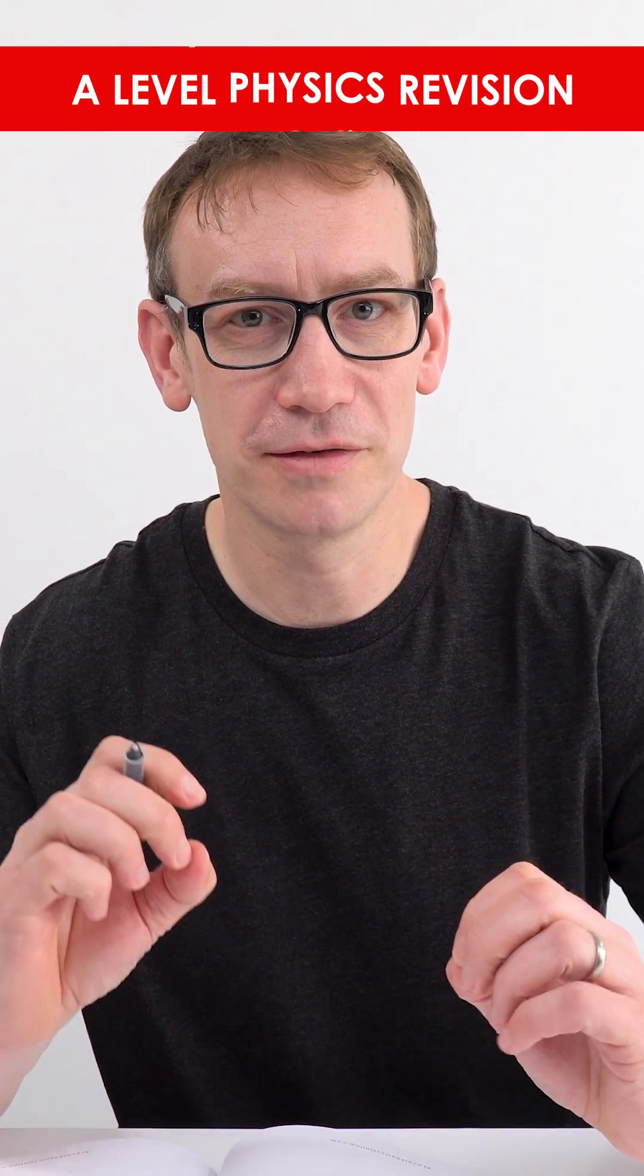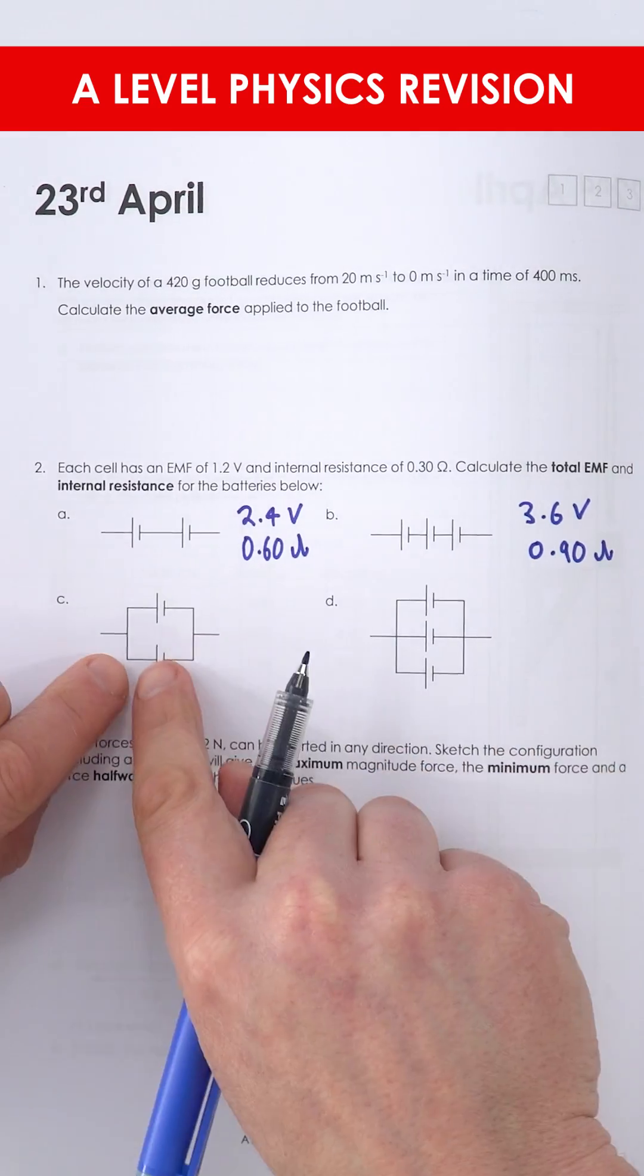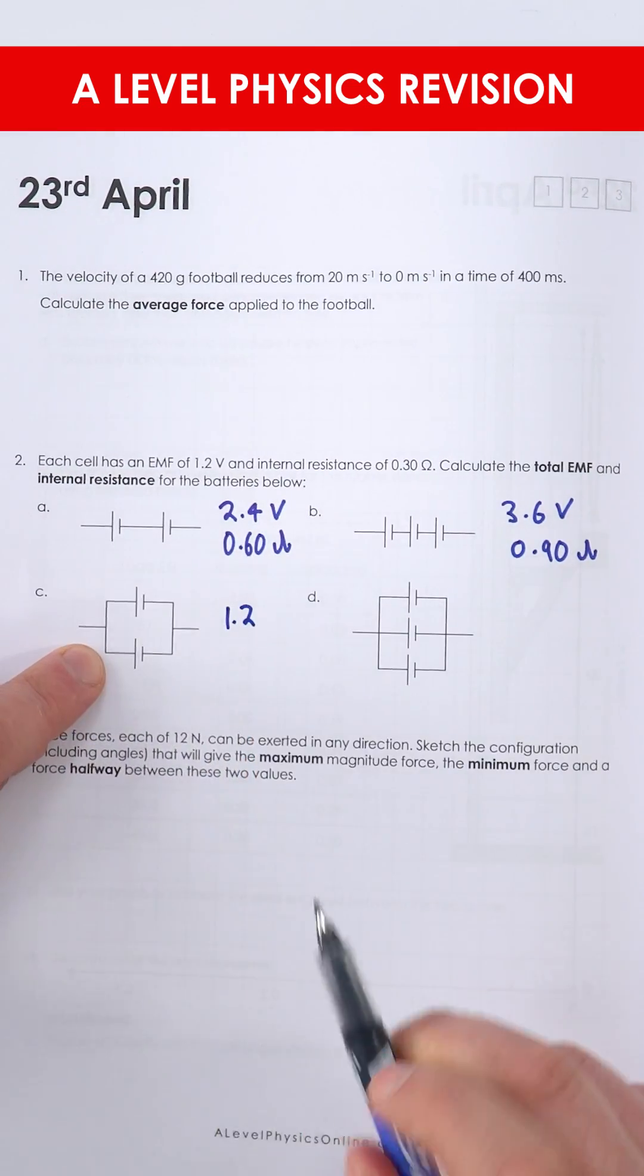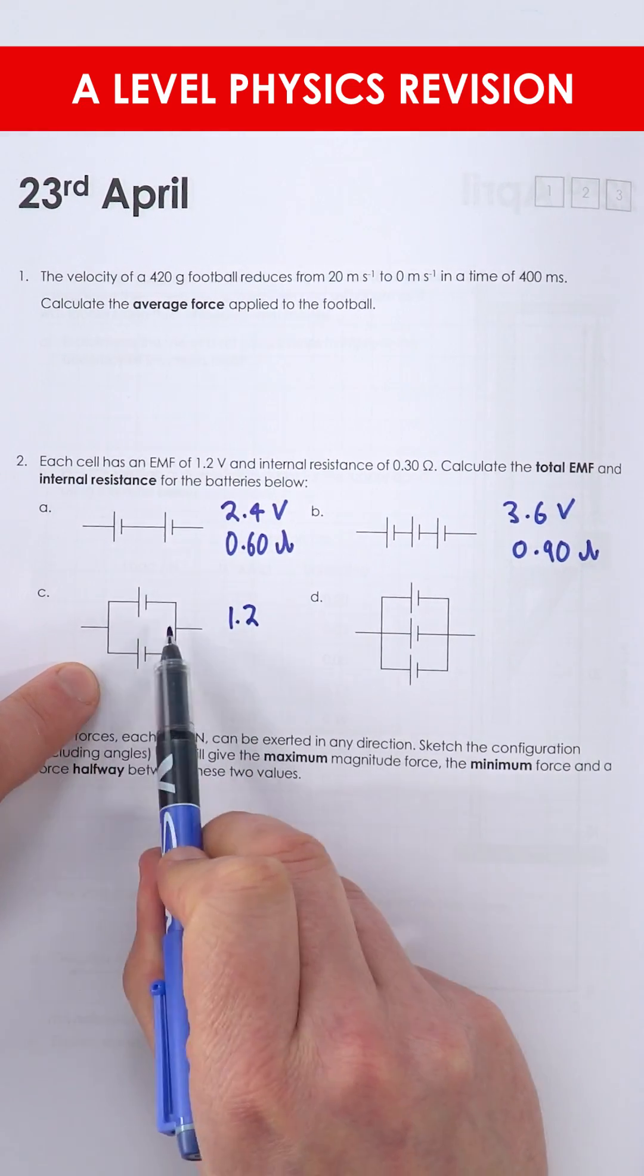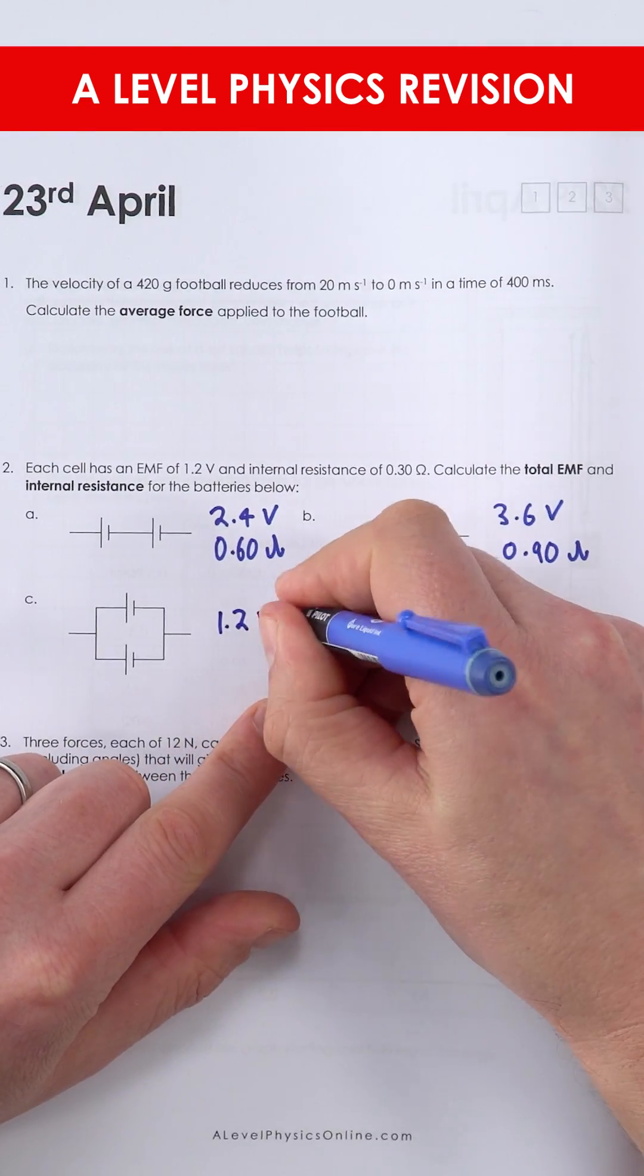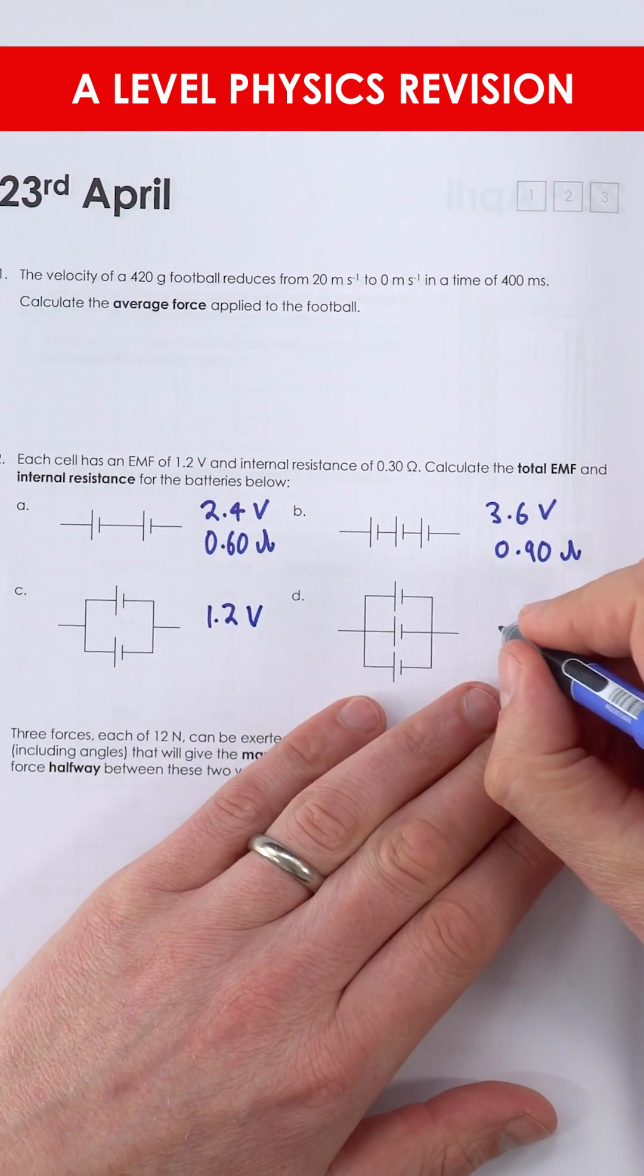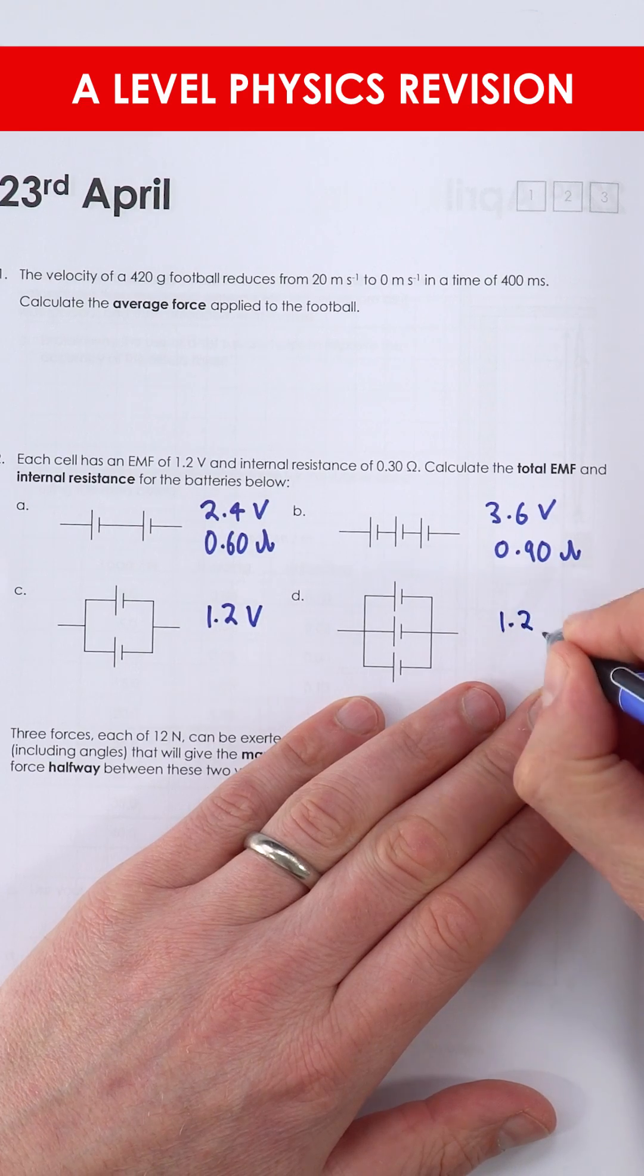If however you have cells in parallel, the EMF for this one is going to be equal to 1.2. That's effectively the voltage between here and here. And again for part D, even though we have three of them in parallel, their total EMF is still going to be equal to 1.2 volts.